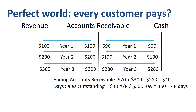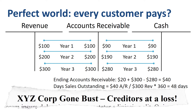Days sales outstanding deteriorates to 48 days. This is where management starts wondering what is going on, as this DSO increase is very large versus previous years. The terms in the contracts with the customers have not changed, so there must be an issue with late payment. They start investigating and find out that one of their customers, XYZ Corporation, has gone bankrupt, and none of the $10 receivable that ABC had on XYZ is recoverable.